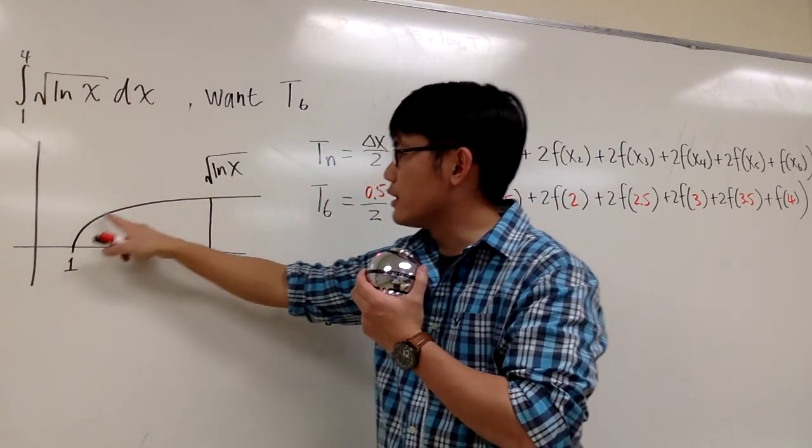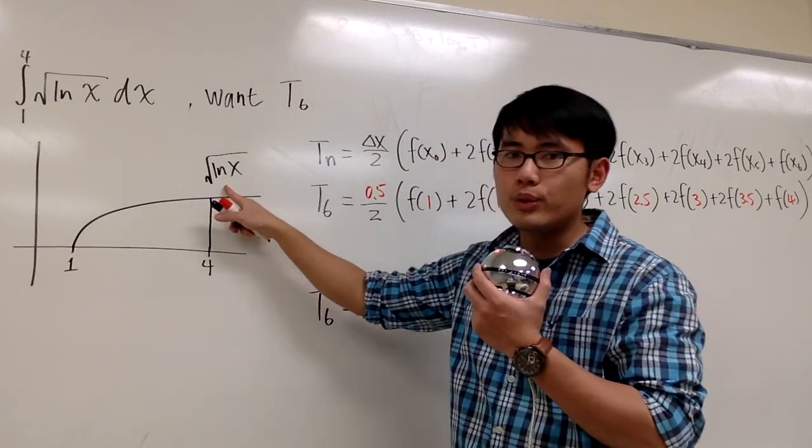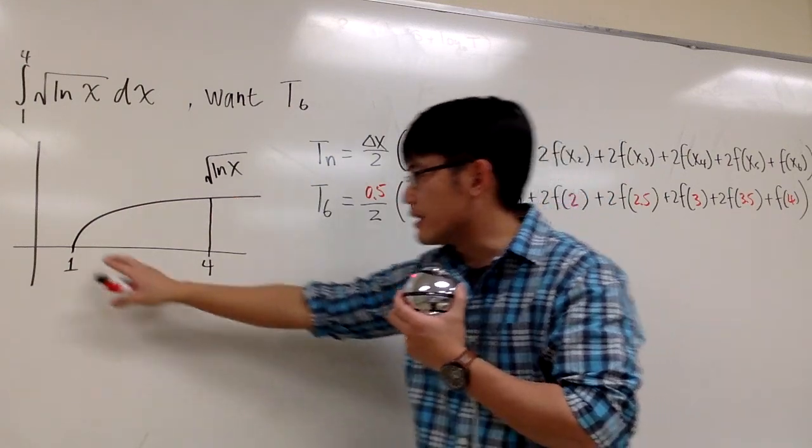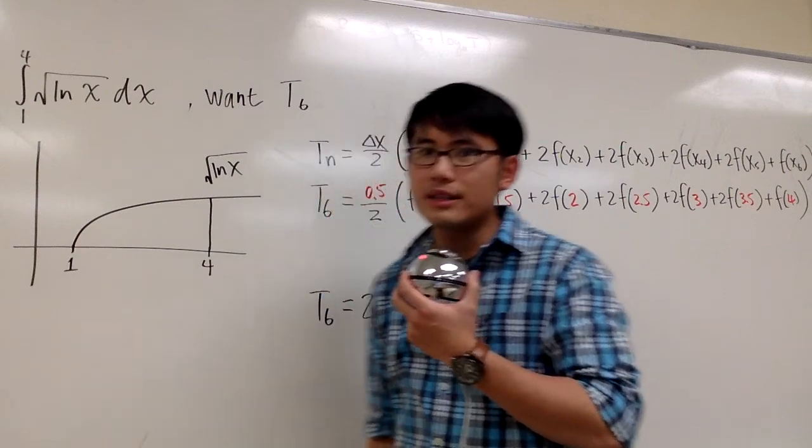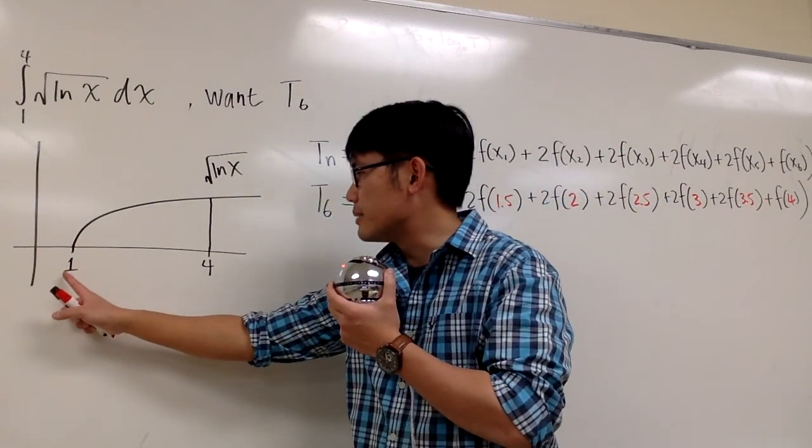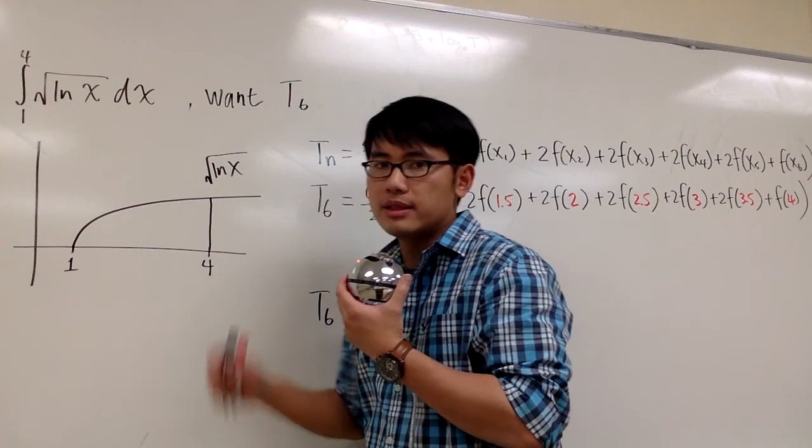First, here is the graph for the equation y equals square root of ln x, and there's nothing here - there's not like a vertical asymptote. This is it, and we're talking about when x is equal to 1 up to x is equal to 4.